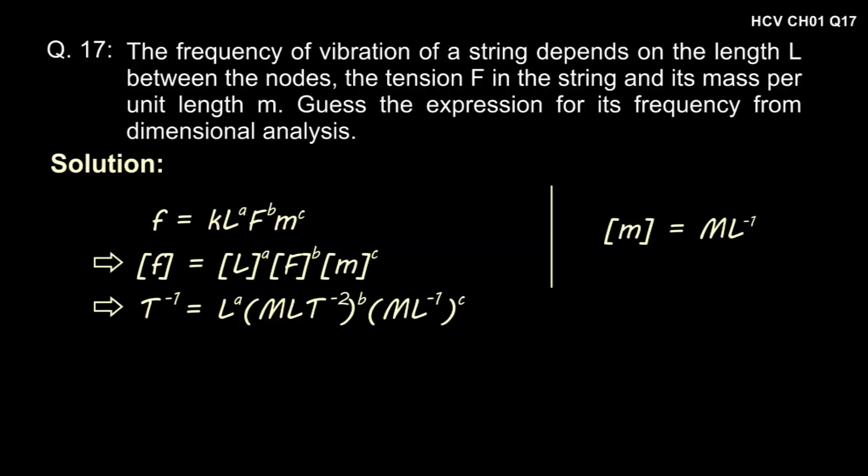Putting these values we get T to the power minus 1 is equal to L to the power A into M L T to the power minus 2 whole to the power B into M L to the power minus 1 whole to the power C.